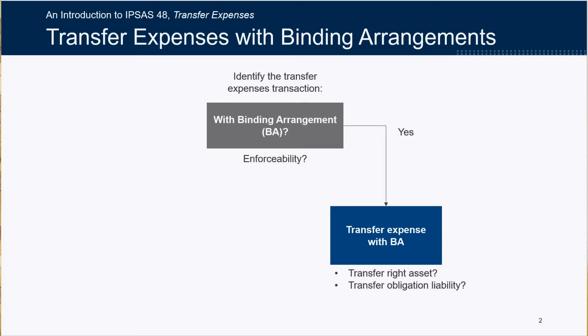Typically, this happens when the transfer recipient satisfies its obligations as specified in the binding arrangement. There could also be situations where the transfer recipient satisfies its obligations before resources are transferred, and when this happens, the transfer provider would have to recognize a liability for its enforceable obligation to transfer resources.